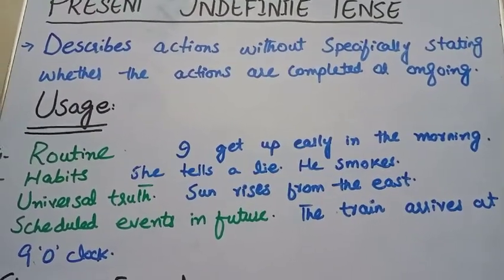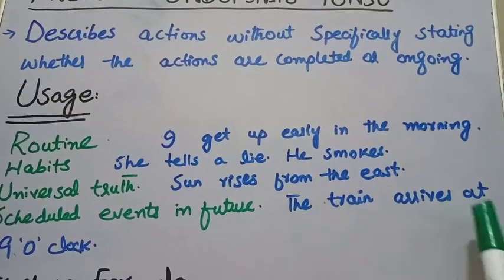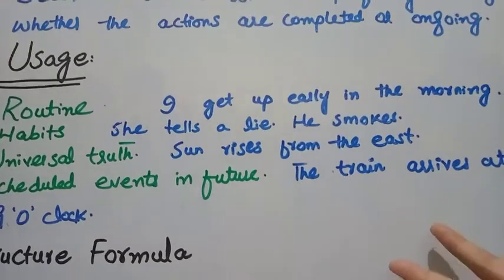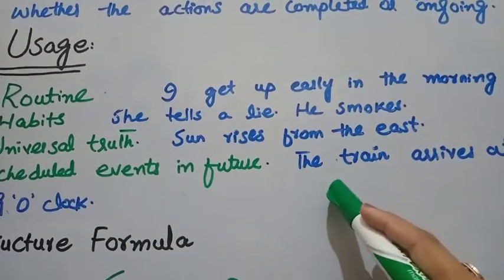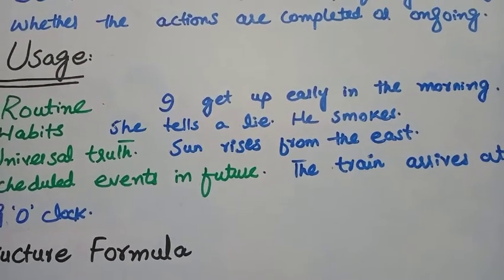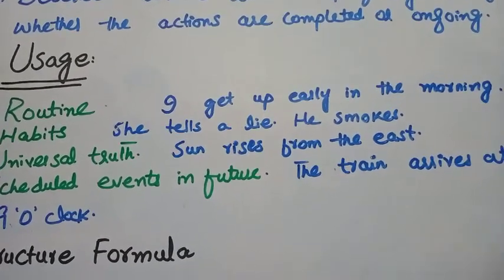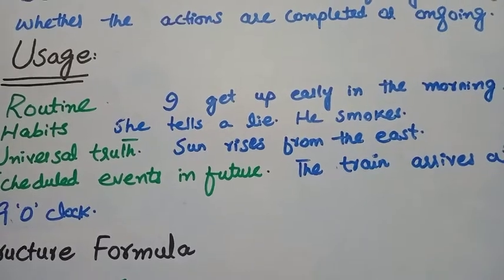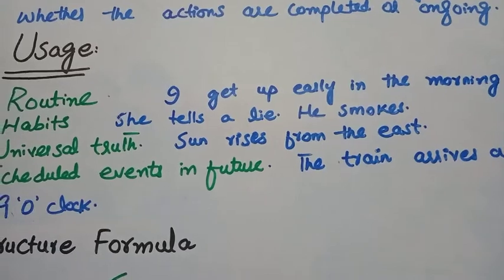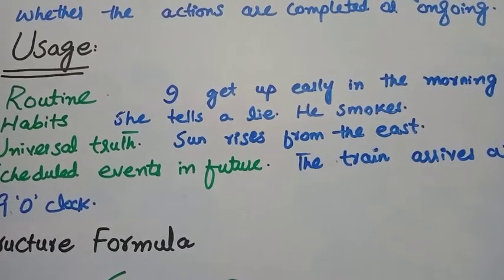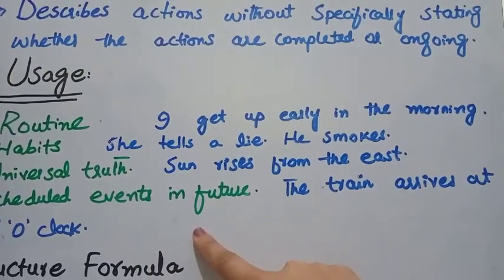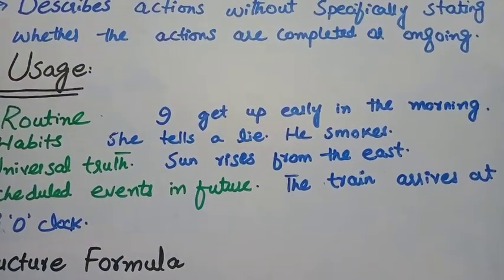For scheduled future events, for example: 'The train arrives at 9 o'clock.' This event is in the future, but we use the present indefinite tense — 'The train arrives at 9 o'clock.' So to summarize: we use the present indefinite tense to show routines, habits, universal truths, and scheduled events in the future. Now let's look at the structure of this tense.